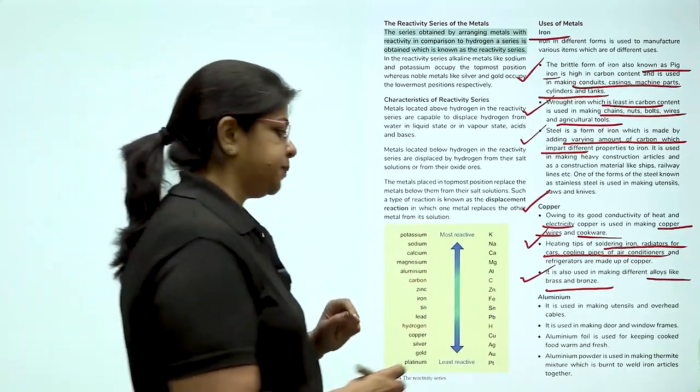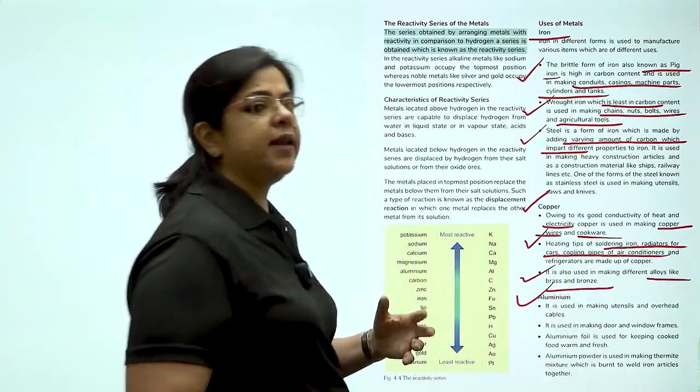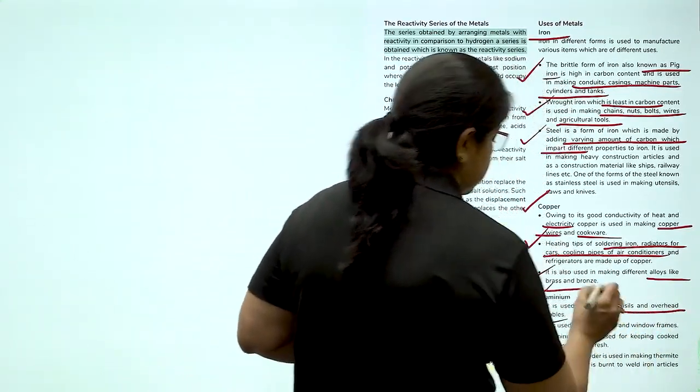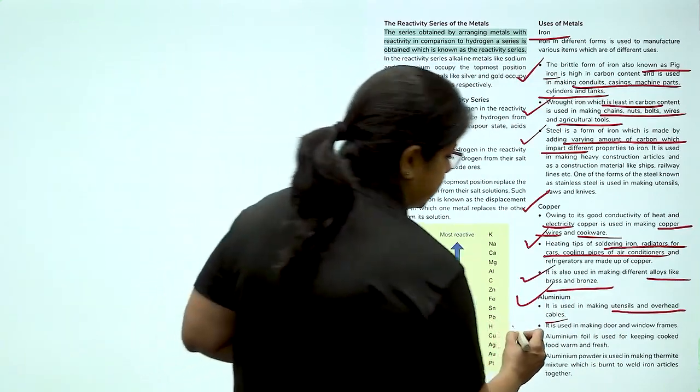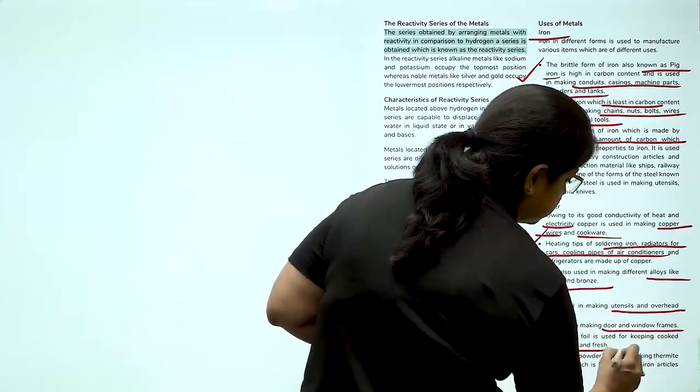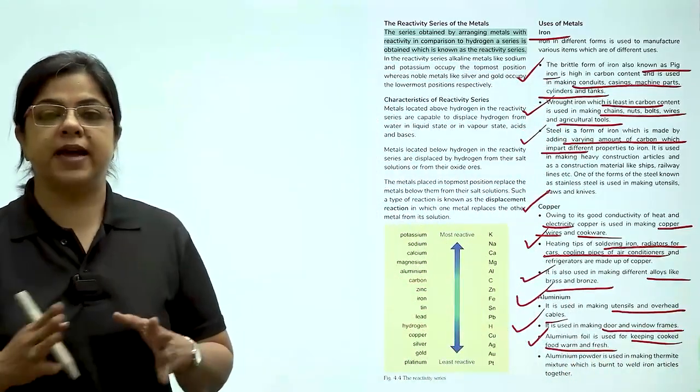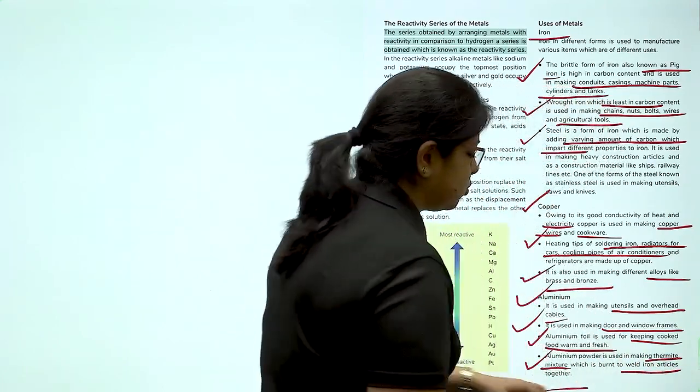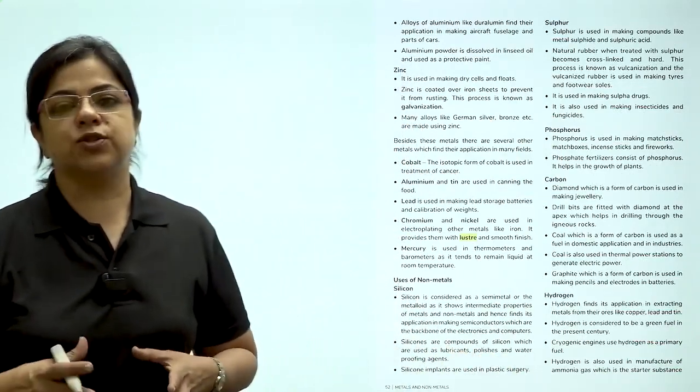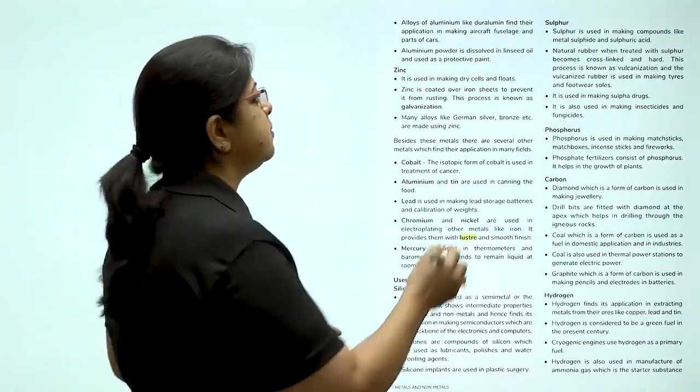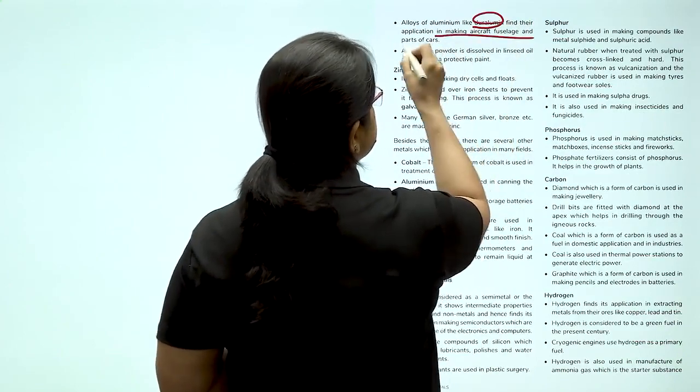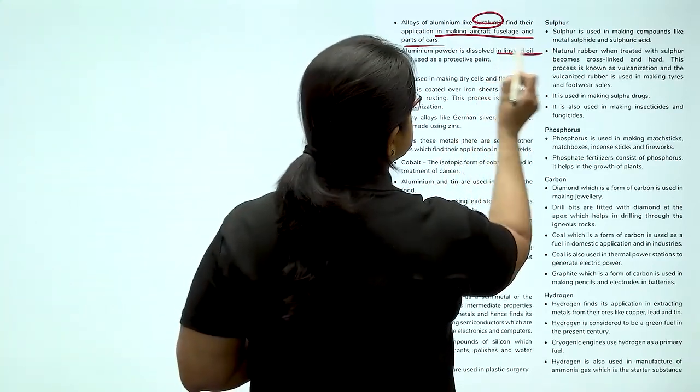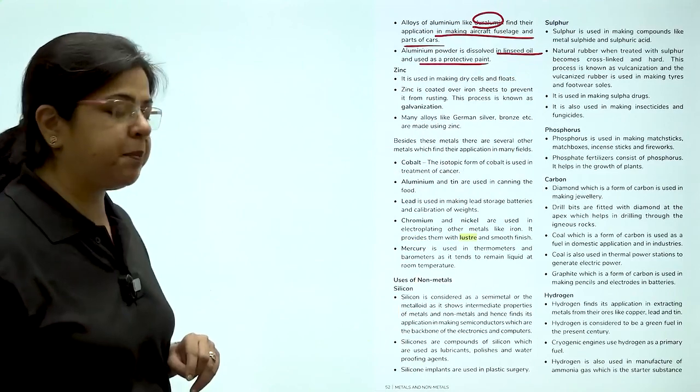Coming next to aluminum. Aluminum is a highly malleable and ductile substance. Once again, it is used in making utensils, overhead cables, in making doors and window frames. It is used to keep the food warm in aluminum foils. And aluminum powder is used in making thermite mixture, used to weld iron articles together. There is an alloy of aluminum, which is called duraluminium, which is used in making aircraft and parts of cars. Aluminium powder is dissolved in linseed oil and it is used as a protective paint.